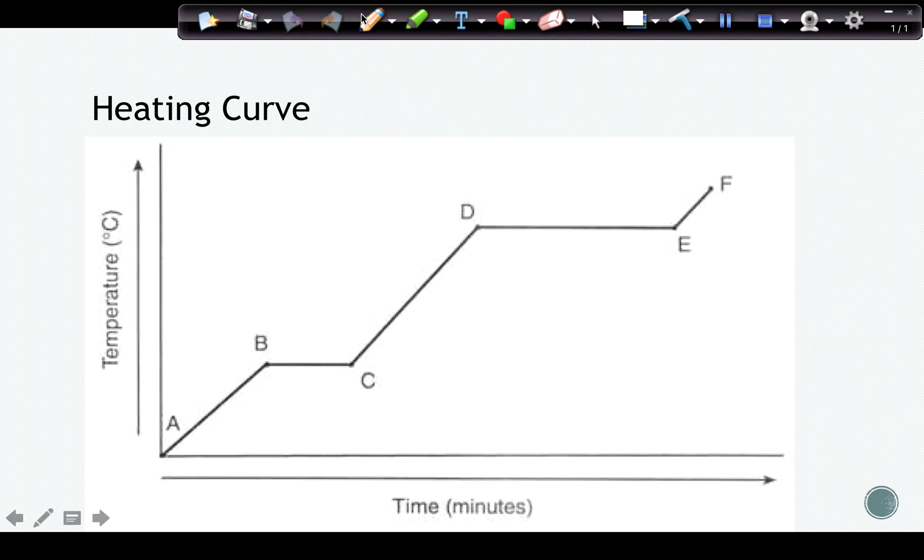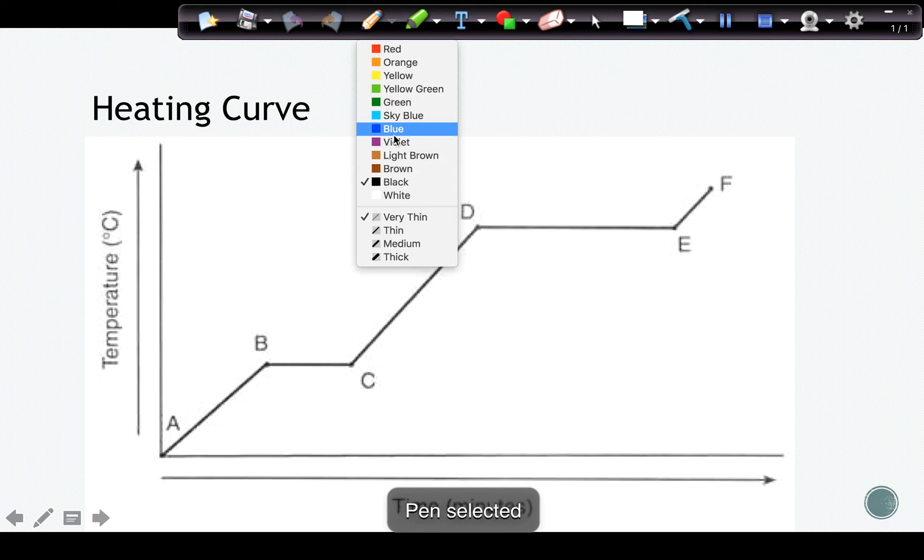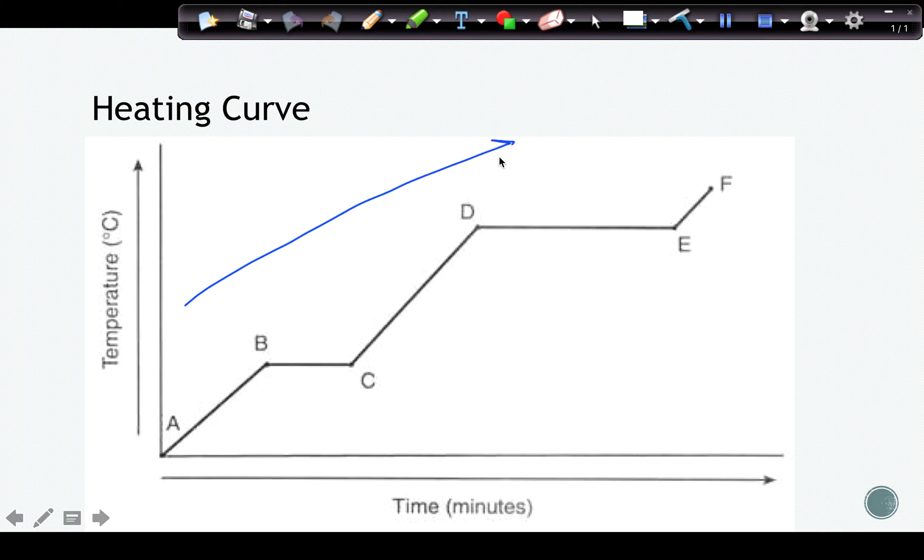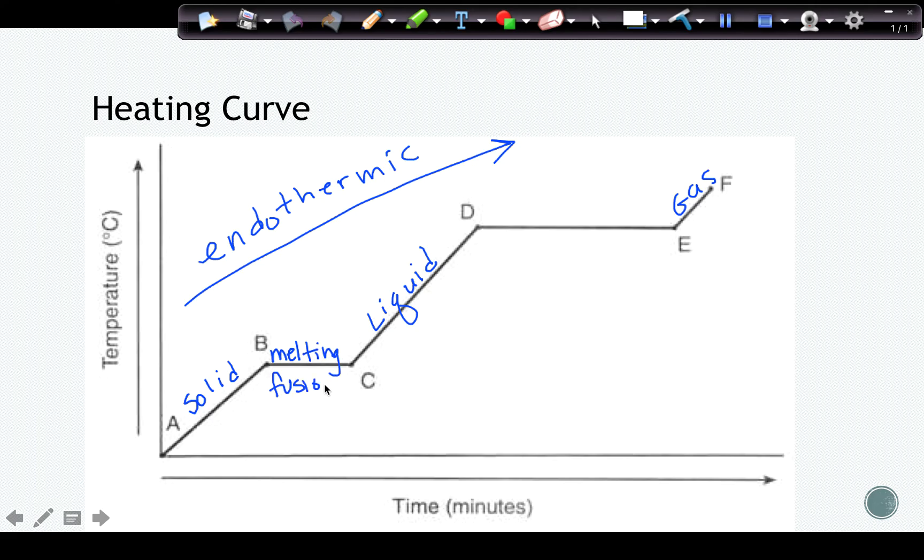These are the phase changes that are on the heating curve, and when we're talking about the heating curve, it looks like this. And again, it goes uphill. Anything that goes uphill will be endothermic, and this has three slanted lines. So it has the three phases, this one at the low end would be solid, the next one would be liquid, and the last one would be gas. That means that this is the phase change of melting or fusion. This is the phase change of vaporization or boiling.